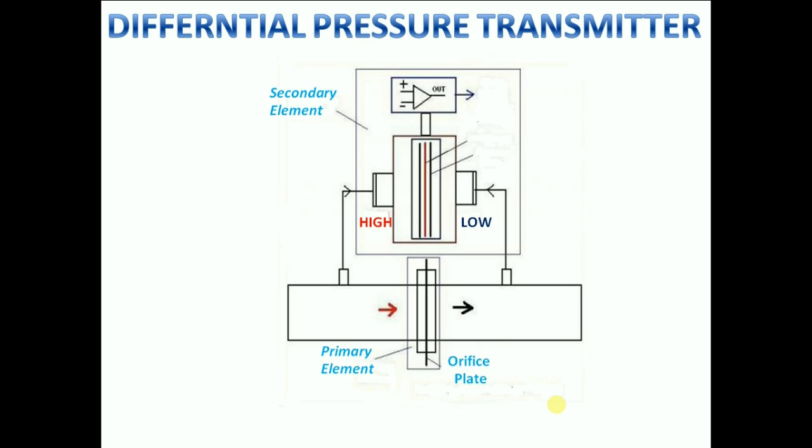In the case of a DP flow transmitter the output signal may also include square root extraction. Although it is common these days for this function to be carried out in a flow computer or DCS system.